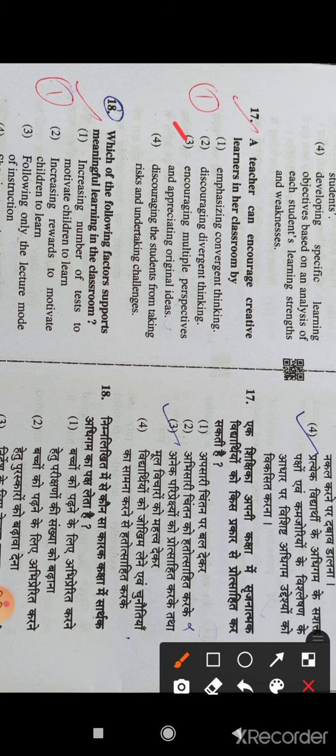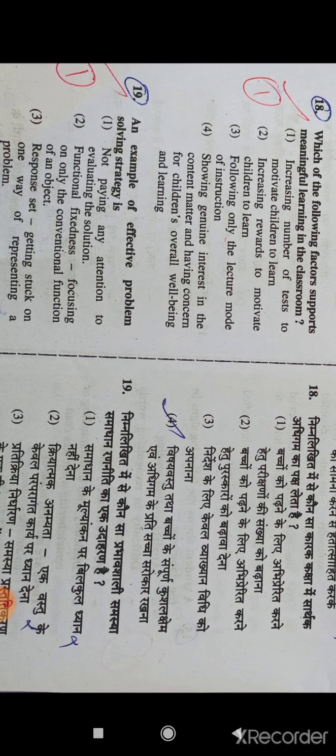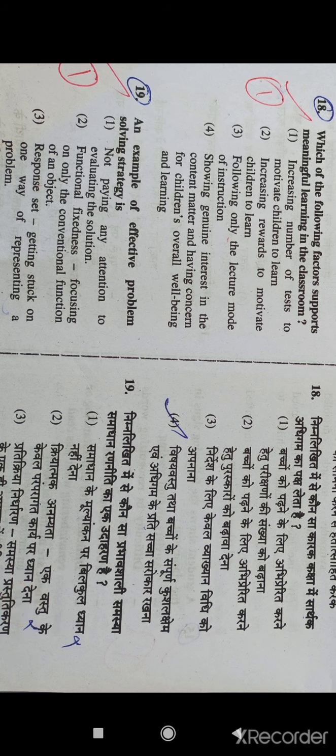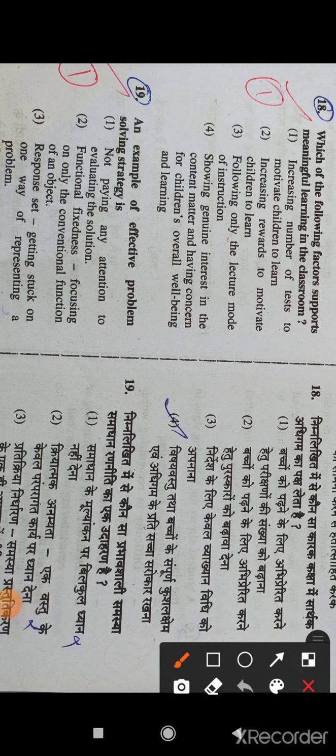Question 18: Which of the following factors support meaningful learning in the classroom? Option number 4 is the right answer: showing genuine interest in the content matter and having concern for children's overall well-being and learning.